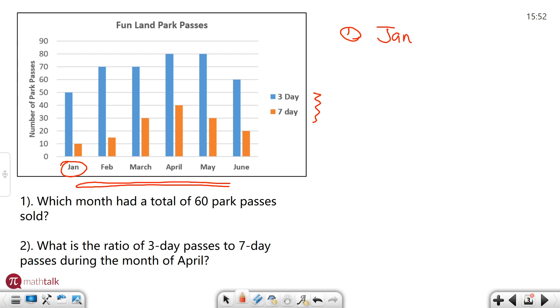It should be hopefully pretty easy to understand that a lot of these answers are automatically wrong because the three day passes alone are more than 60. For example, April has about 80, so does May three day passes. So that's already well more than 60.